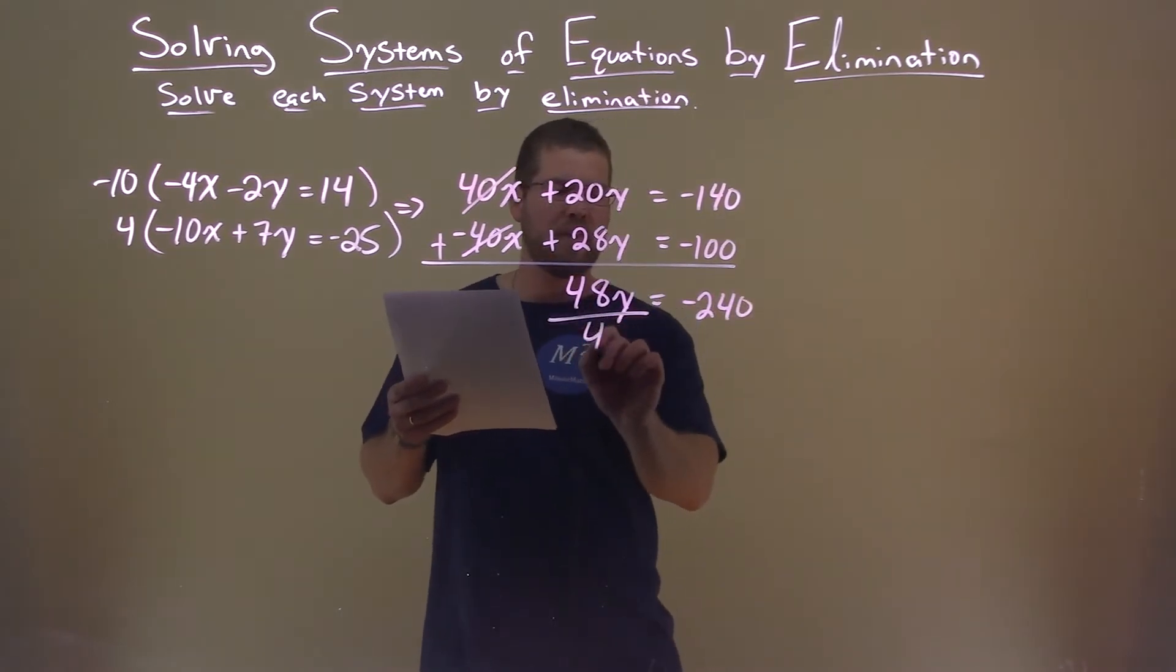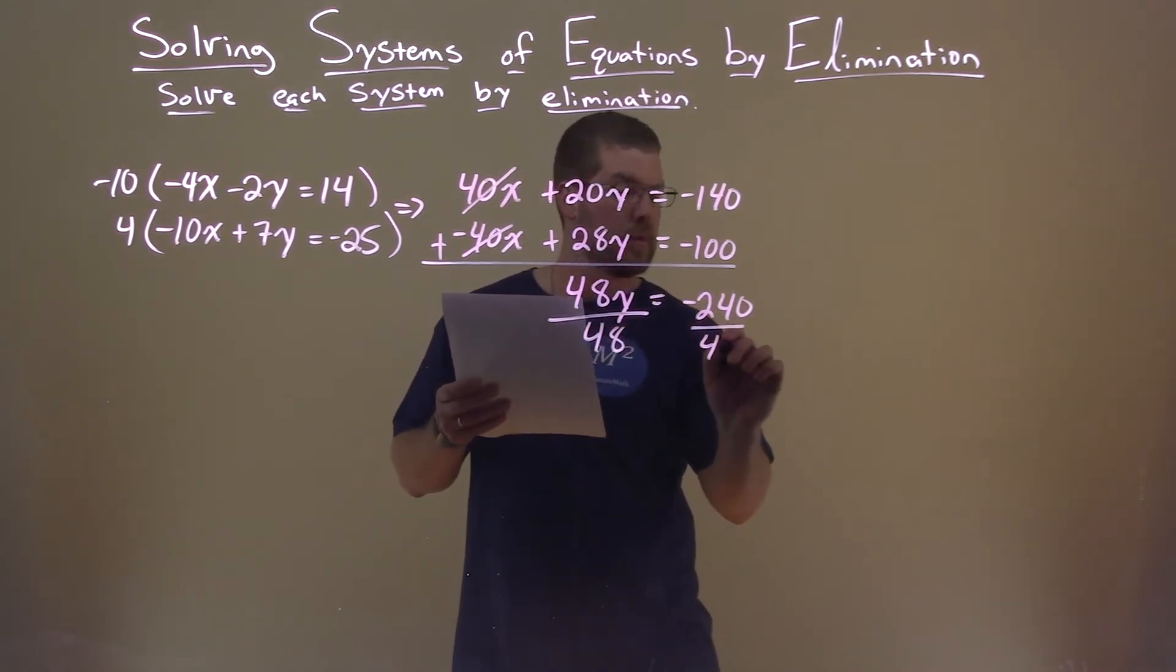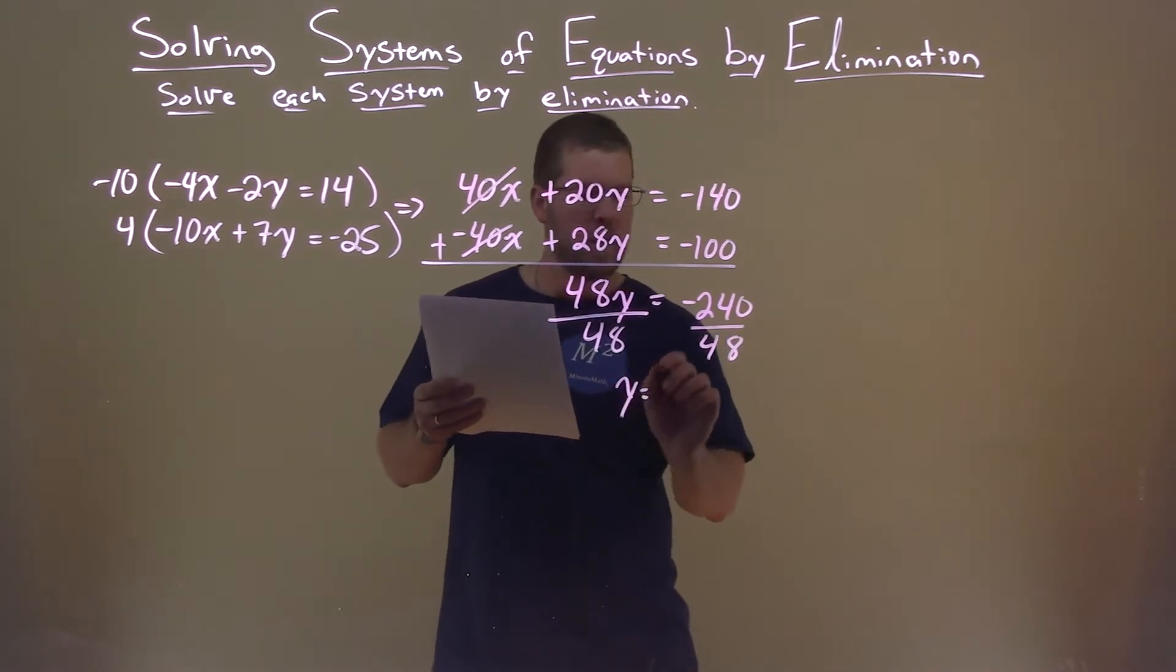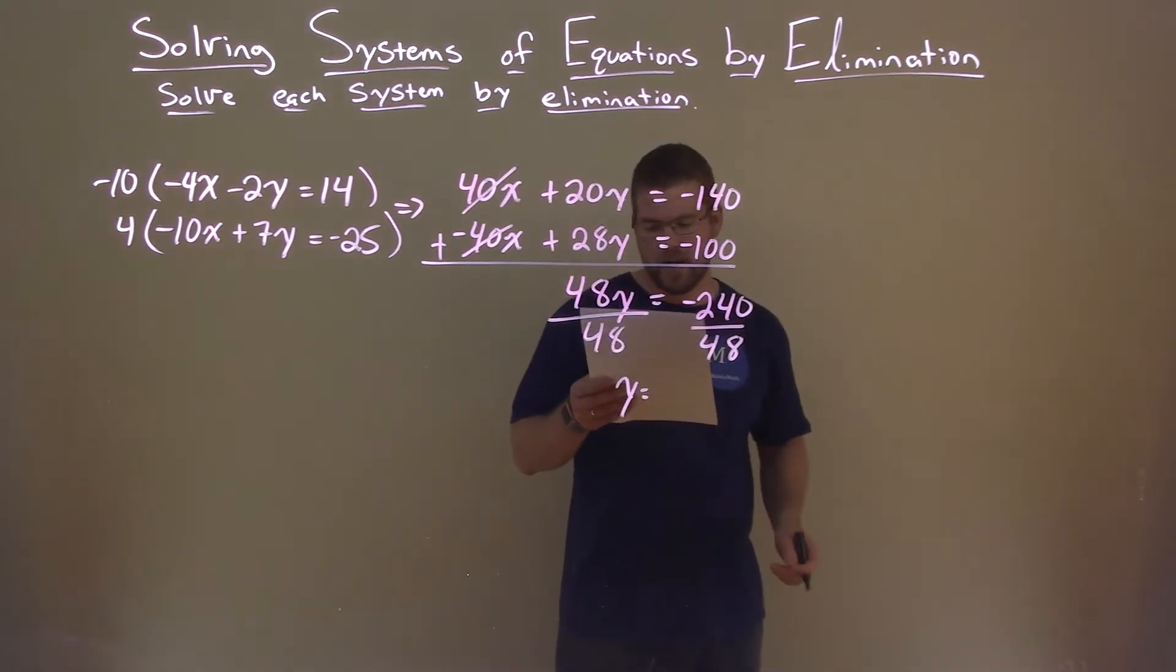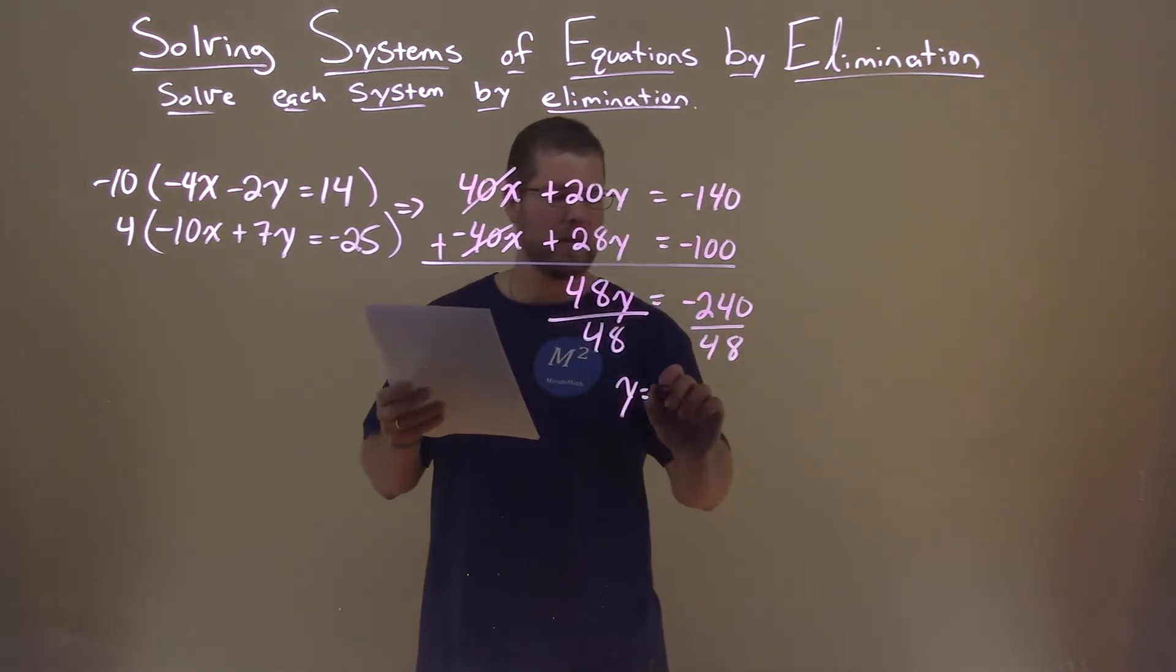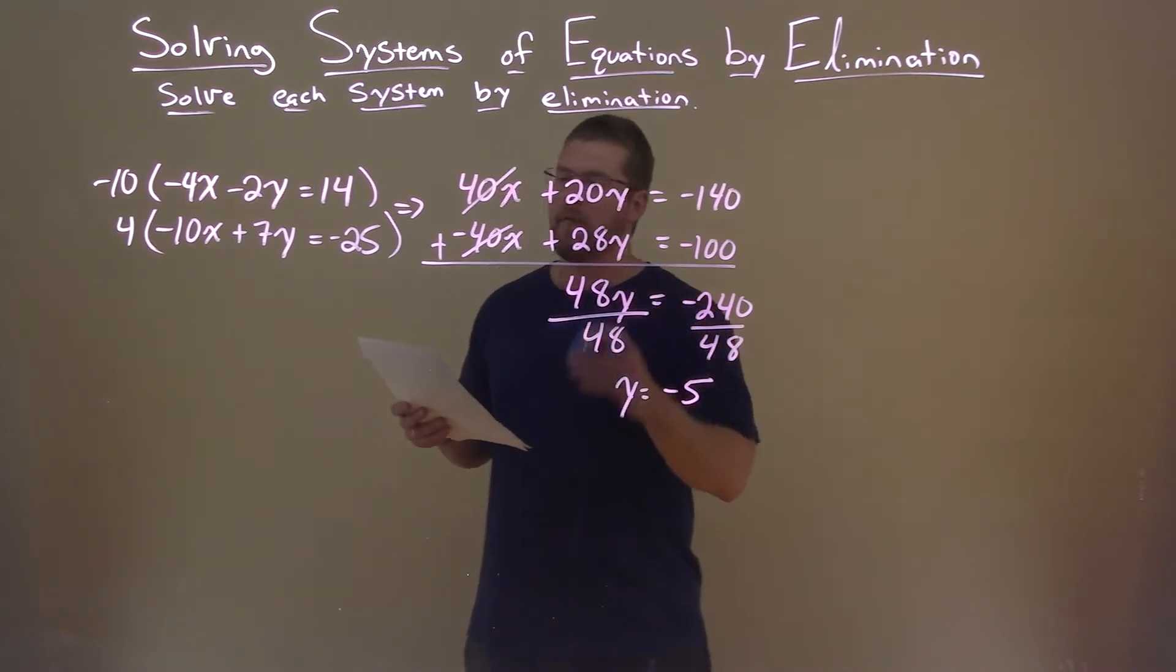Divide both sides by 48 here to get y completely by itself. And y is, well, negative 240 divided by 48 is a negative 5. We got our y value.